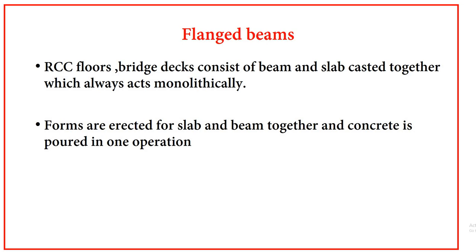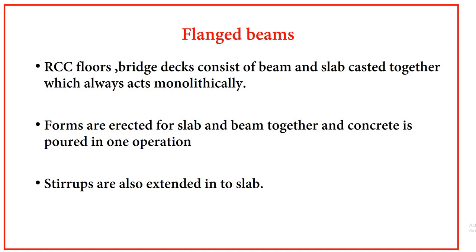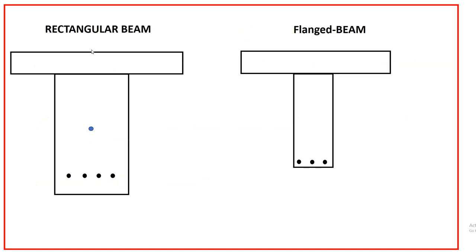The form walls are erected in such a way that the slab and beam are together, and the concrete is poured in one operation. The stirrups and band bars are also extended into the slab. Now let us see what is the difference — in a rectangular beam, there is no connection between the slab and beam.